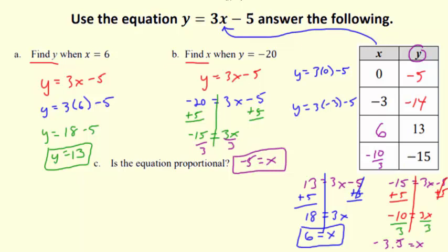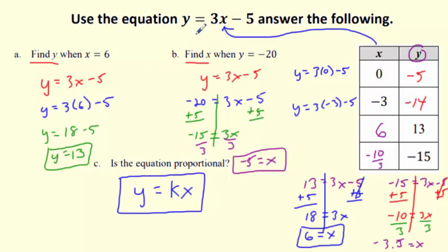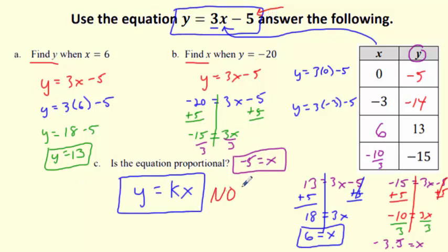One last question: is y equals 3x minus 5 proportional? To be proportional, it must be exactly y equals kx. I see y equals 3x — it looks good, K would be 3 — but the problem is this minus 5. This is not y equals kx. You can't add or subtract anything at the end. It must be something like y equals 3x — that would work — but with the minus 5 it doesn't. The ratio won't be constant times by 3x because of that minus 5. So it is not proportional. That's a lot of information — good luck on the mastery check. Peace out.